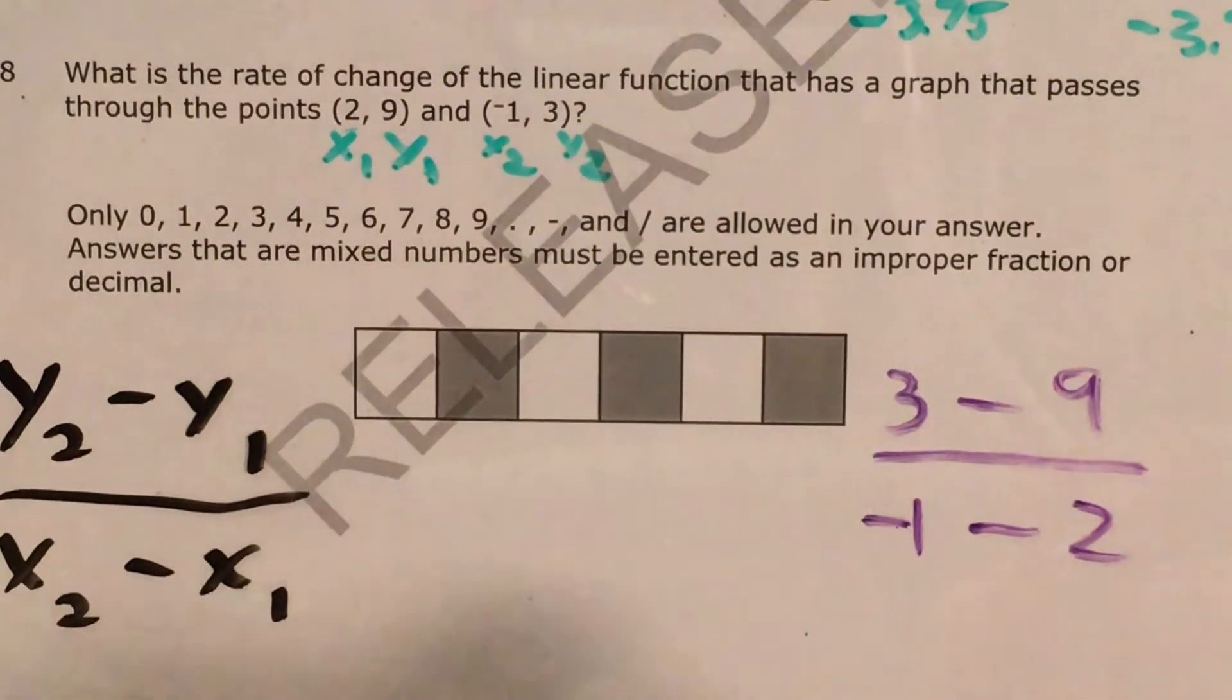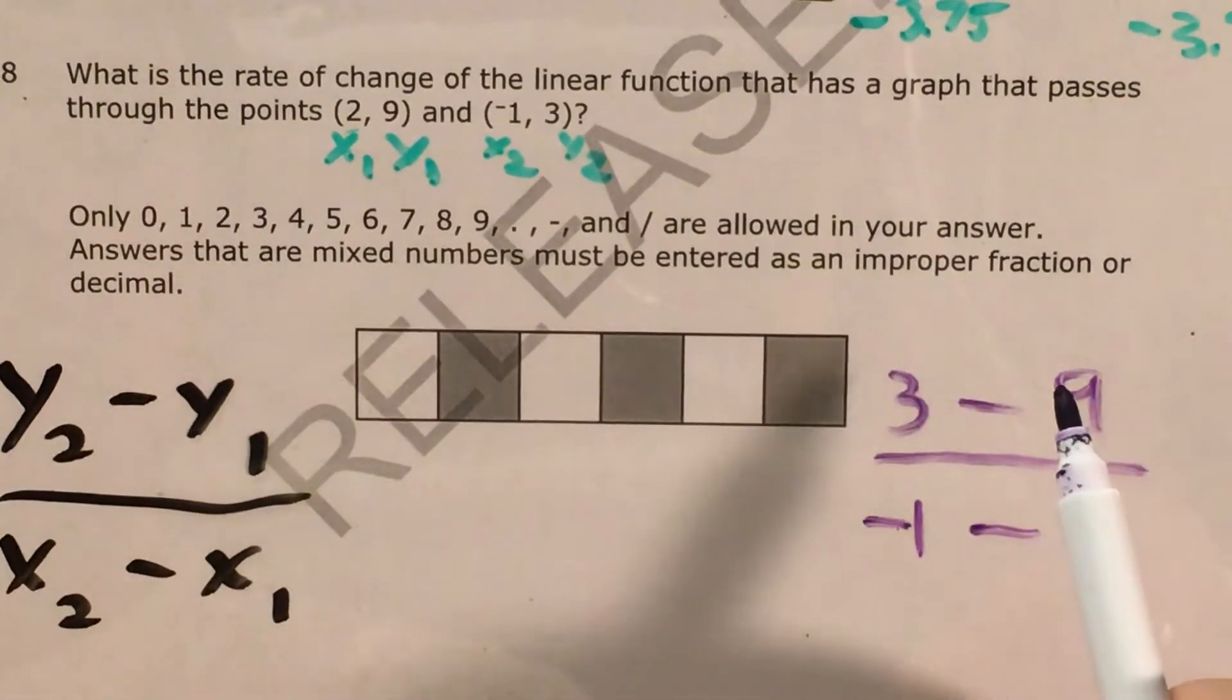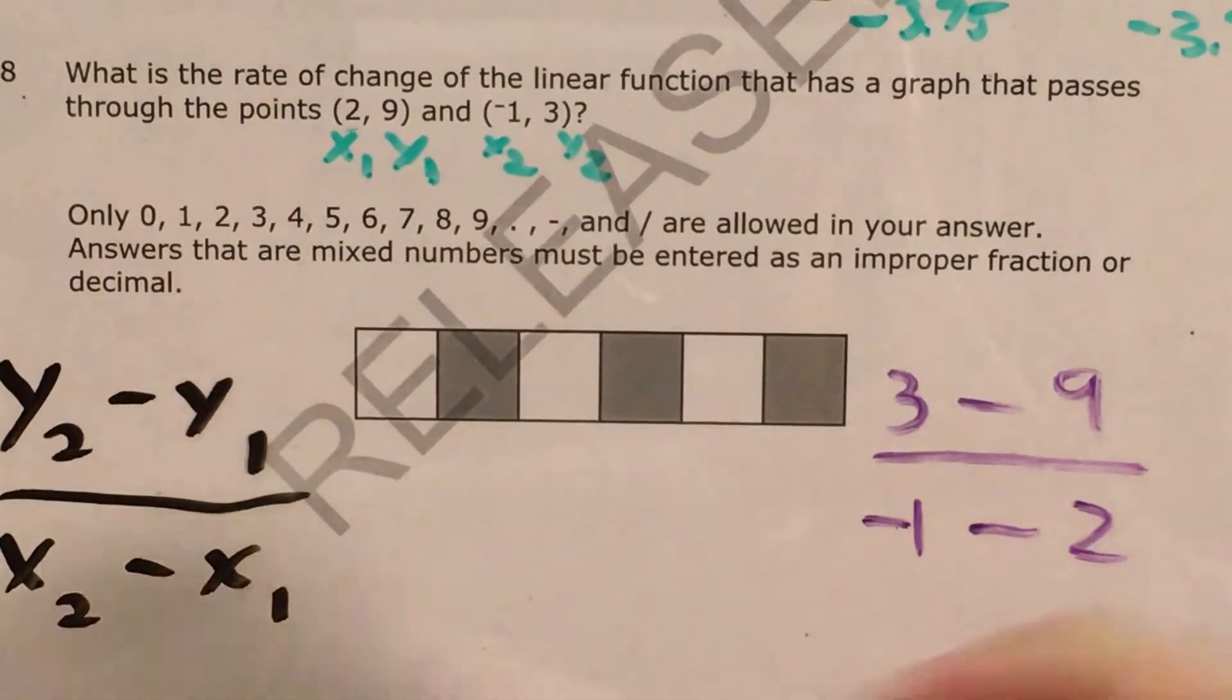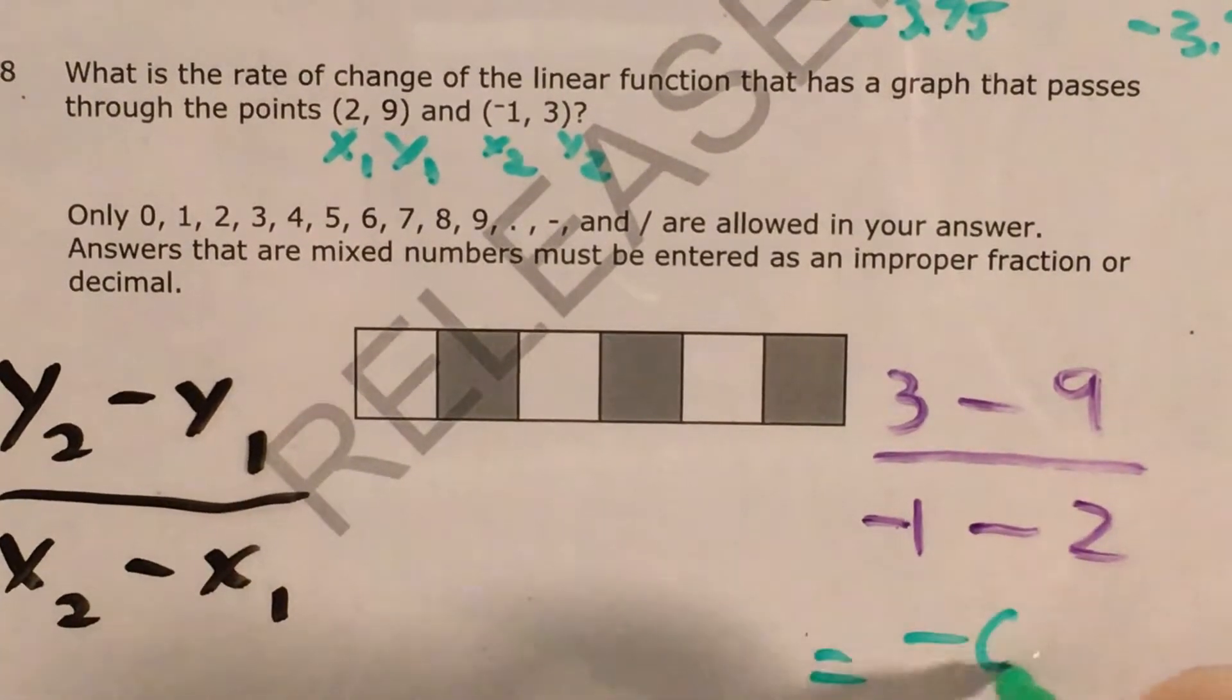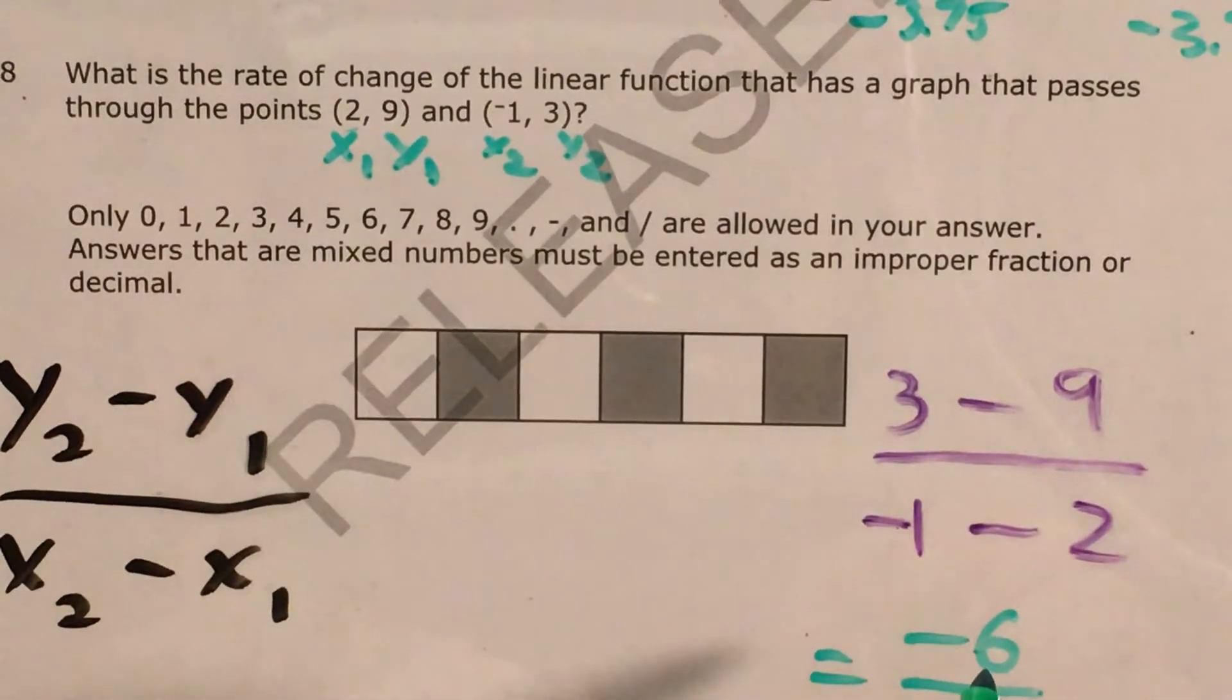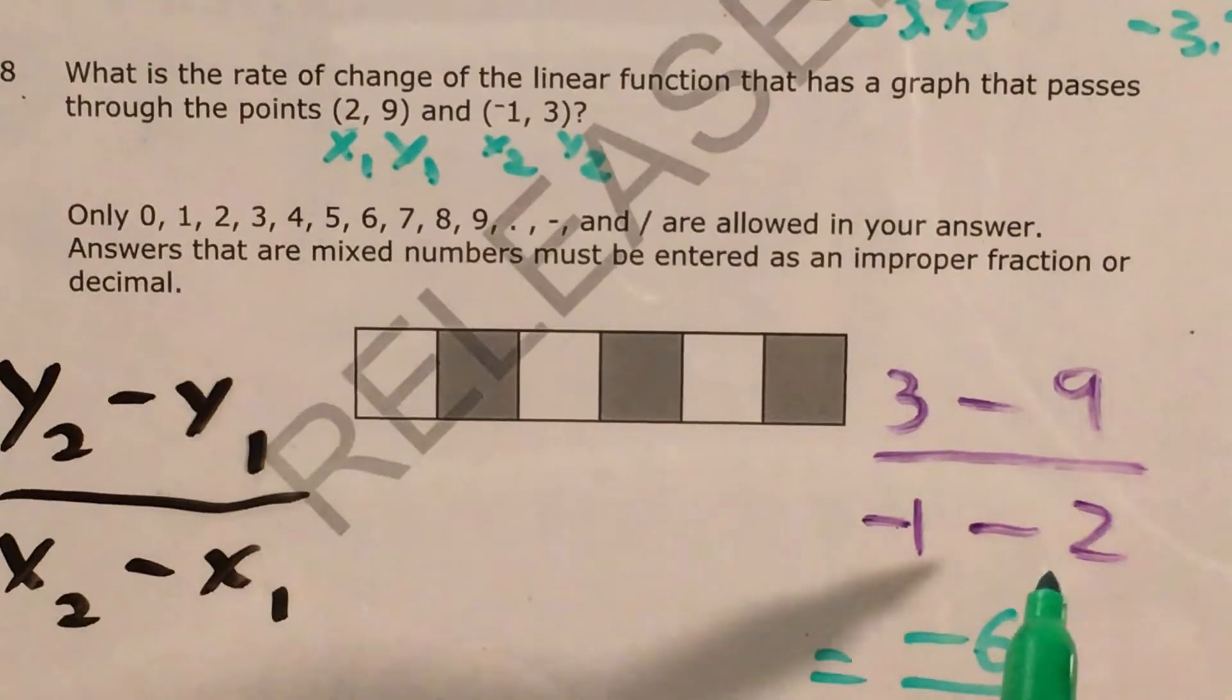So now I need to do a little bit of arithmetic. I see 3 minus 9, and I can do that in my calculator or in my head, but either way I should get -6. And I see -1 minus 2, and I tell myself okay that's just 1 plus 2 with a negative sign in front of it, so that's -3.